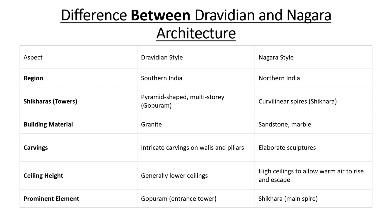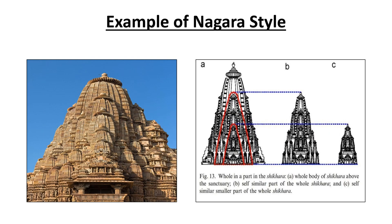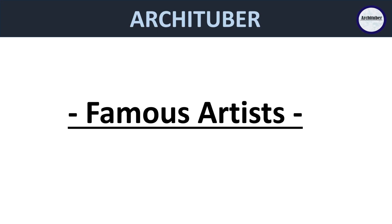Here is the Dravidian vs Nagara comparison chart. We have region, shikhara, building materials, carving, ceiling height, and prominent elements — you can go through all of these. We have examples of the Dravidian style and examples of the Nagara style as well.